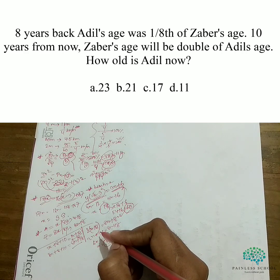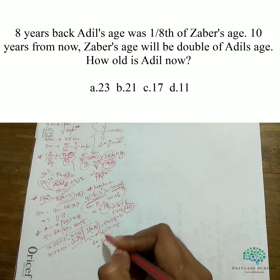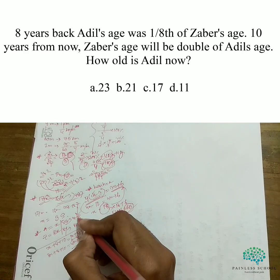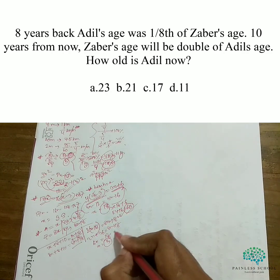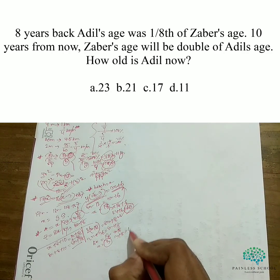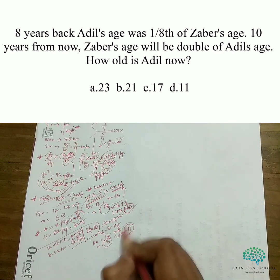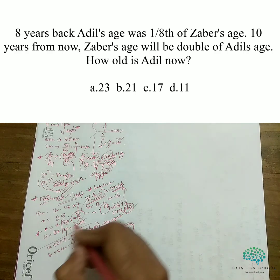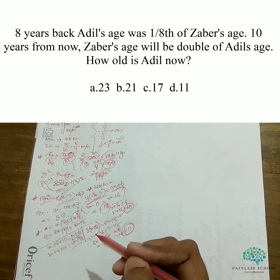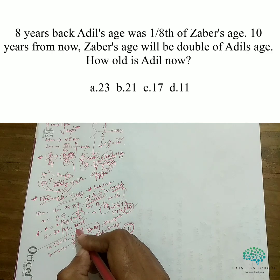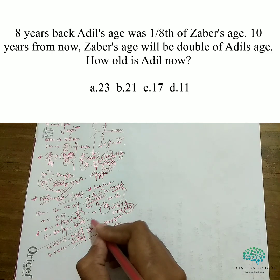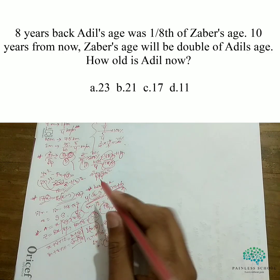We need to find how old the person is now. The younger is x plus 8, equal to 3 plus 8. The other one is 3 times 8, which is 24, and 24 plus 8 is 32. So the other one's age is 32.